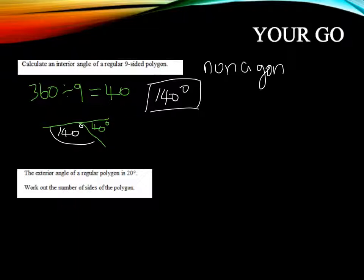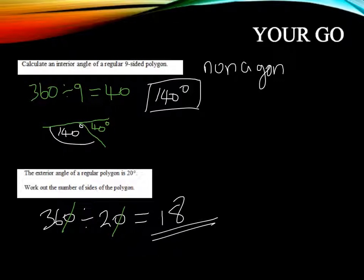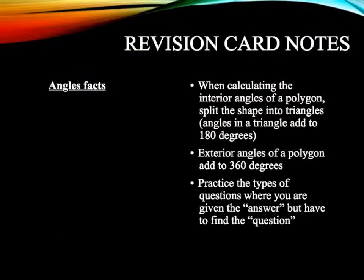And the second one, the exterior angle of a regular polygon is 20 degrees. Work out the number of sides. Okay, so here we go again. 360 divided by 20 is going to give me... And again, I'm going to show you a very quick tip here. 360 divided by 20 is the same as 36 divided by 2. And 36 divided by 2, I'm halving 36, and I'm going to get 18. So the polygon has 18 sides.